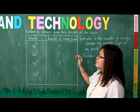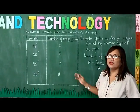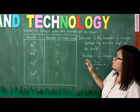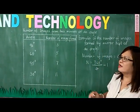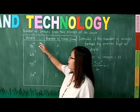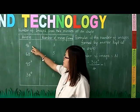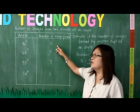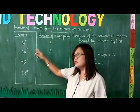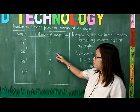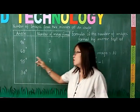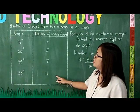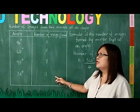This is the result of the activity. For two mirrors at a given angle, the number of images formed are as follows: at 90 degrees, 3 images are formed; at 60 degrees, 5 images are formed; at 45 degrees, 7 images are formed; and at 30 degrees, 11 images are formed.